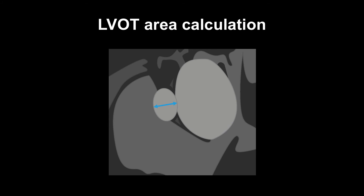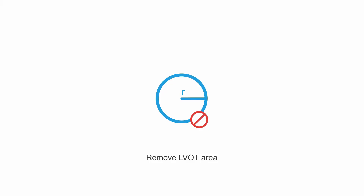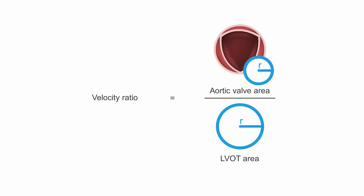Other imaging techniques have shown that, in reality, the left ventricular outflow tract is not circular but more oval-shaped. The potential for errors relating to measurement of the left ventricular outflow tract can be avoided by removing the LVOT cross-sectional area from the continuity equation. Calculation of the velocity ratio, or VTI ratio, can be performed, and this is known as the dimensionless index.